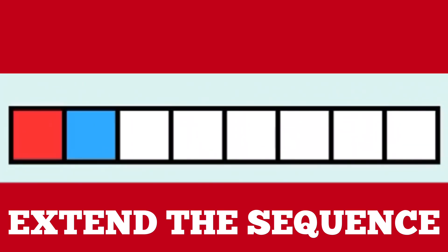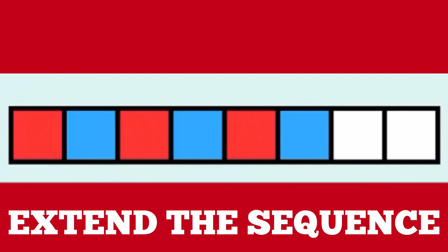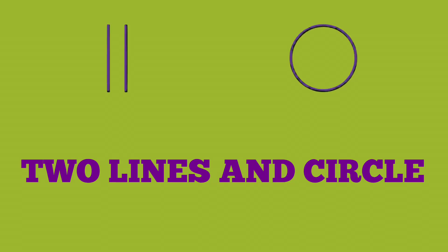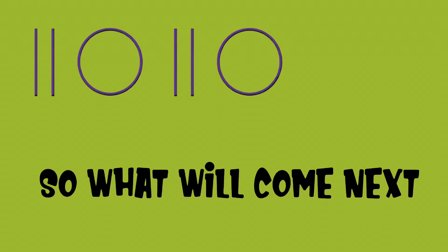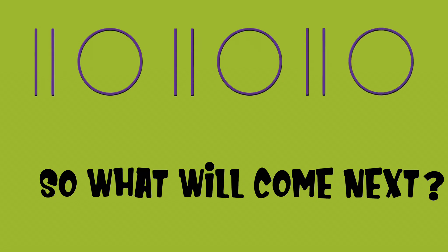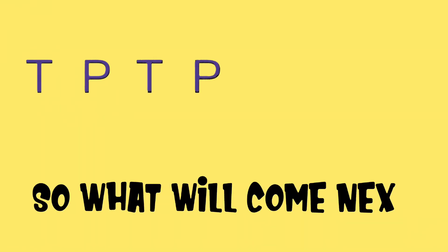Patterns — extend the sequence. Two lines and circle. Let's complete this pattern: two lines, circle, two lines, circle. So what will come next? Two lines, circle. T, P, T, P — so what will come next? T, P.